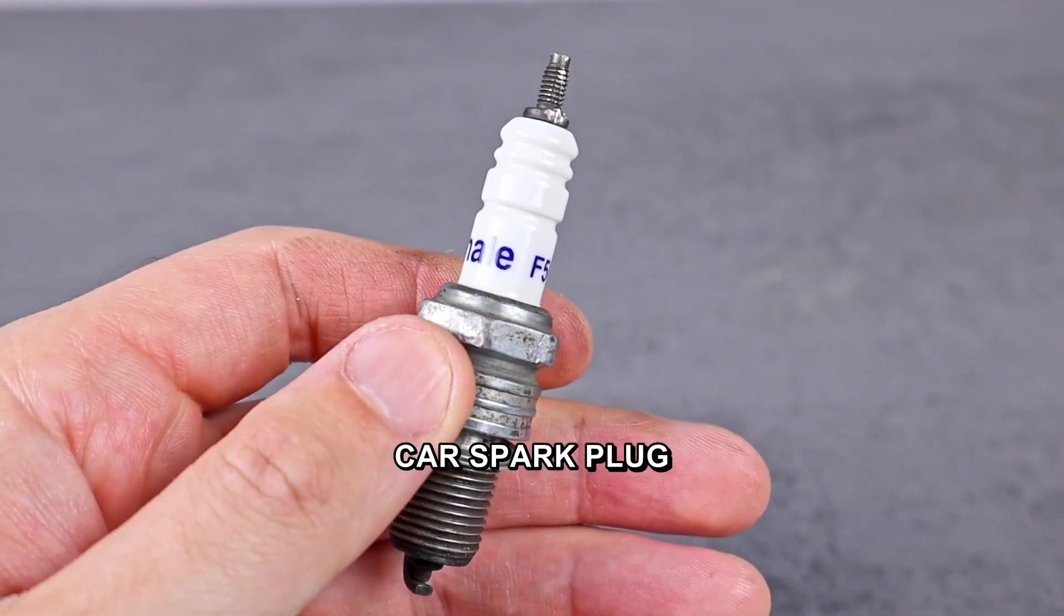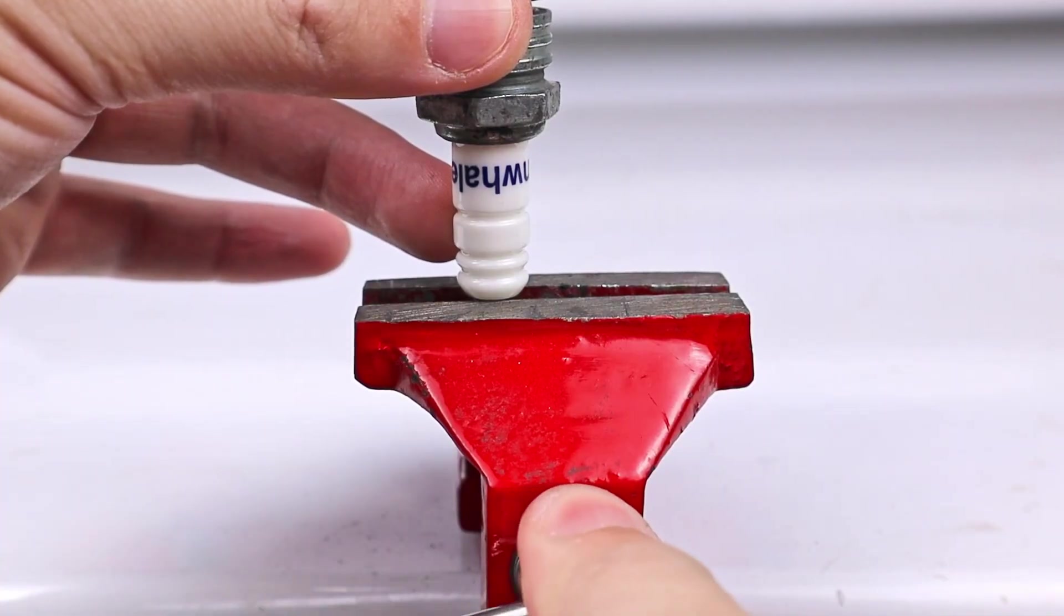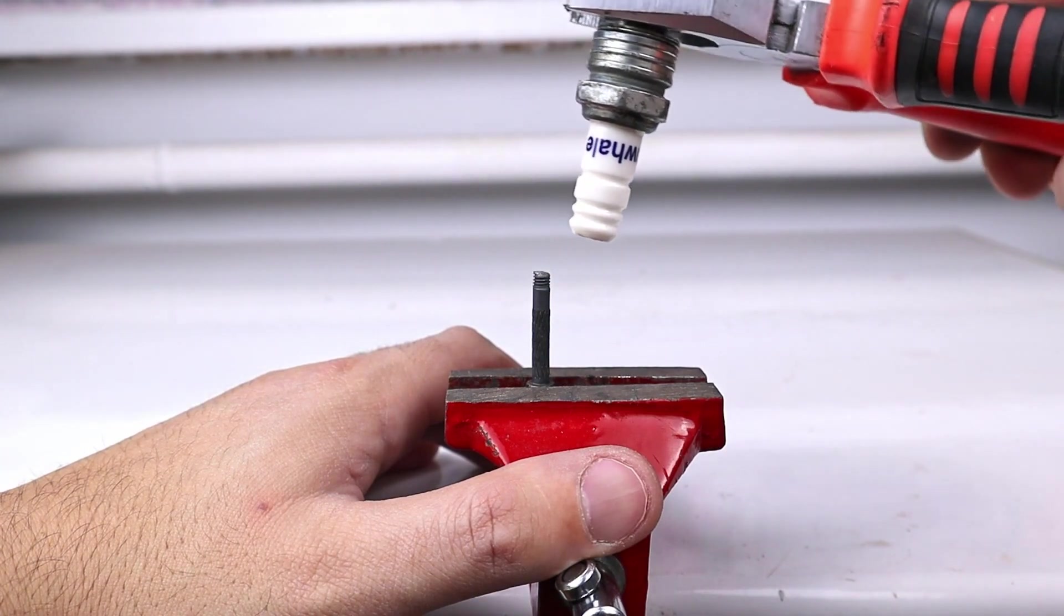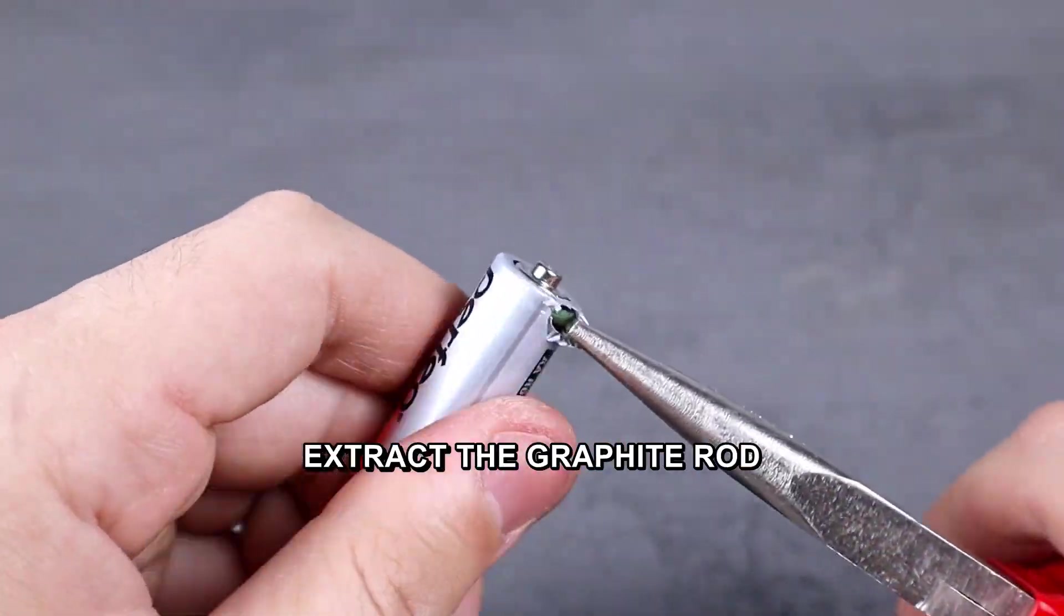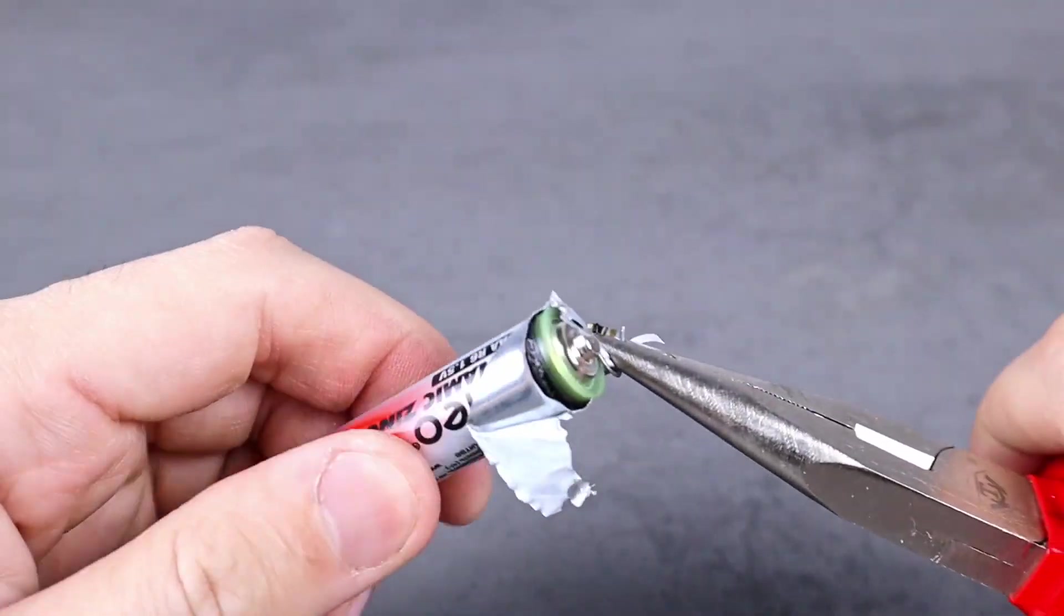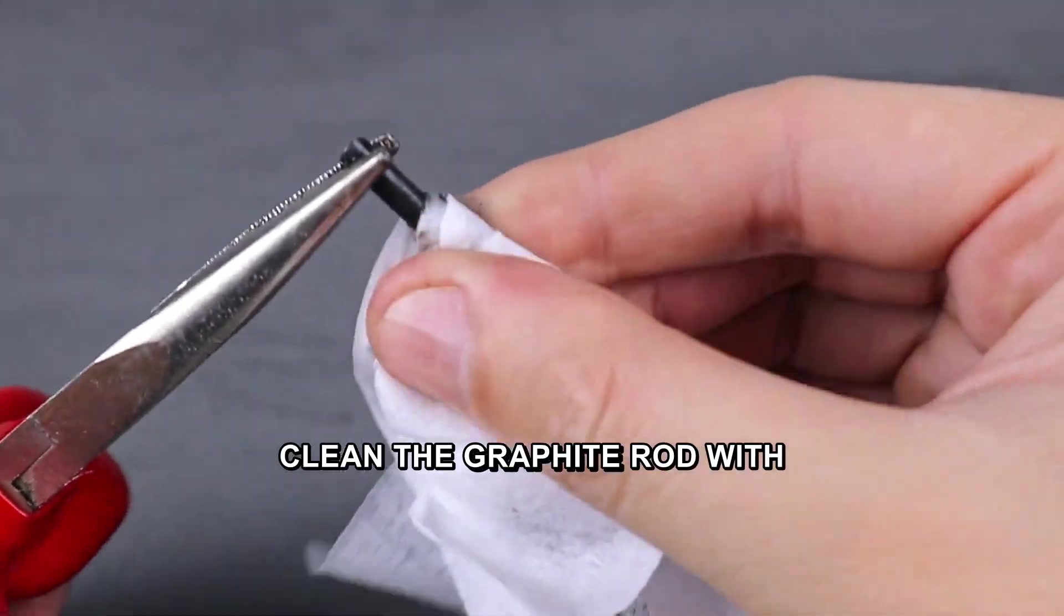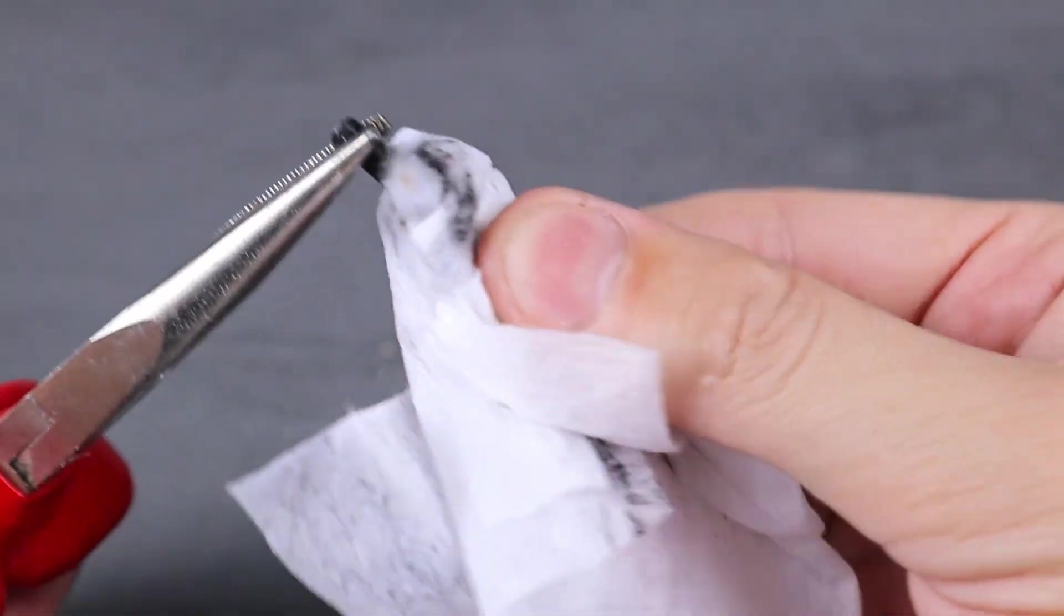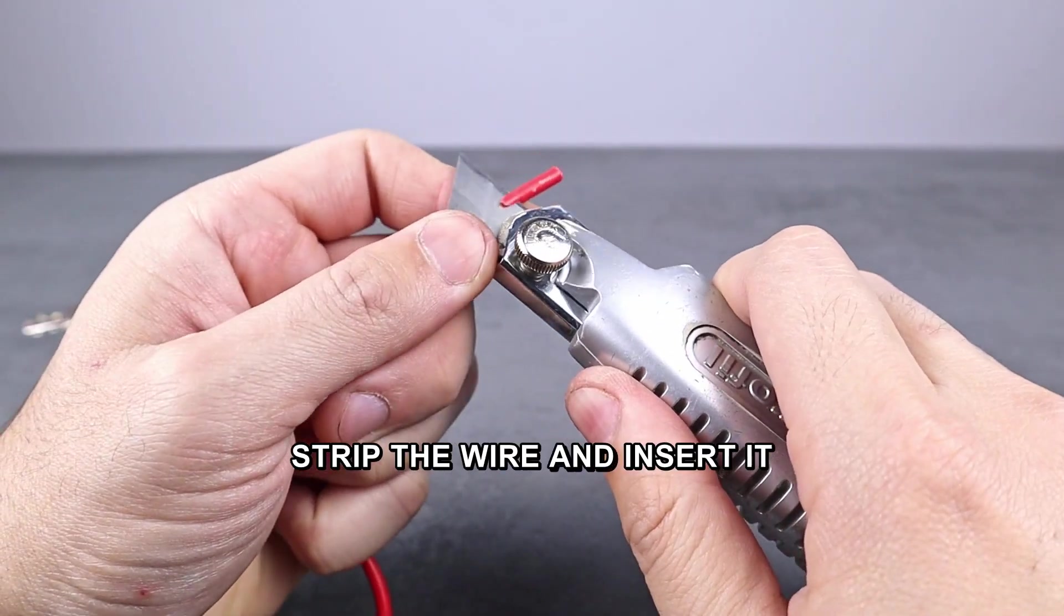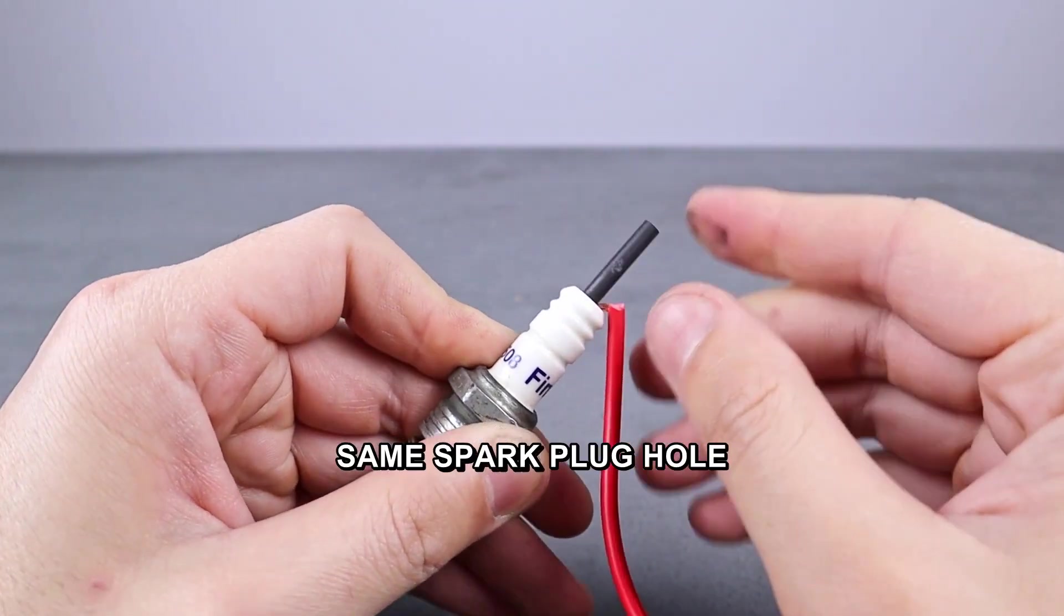Remove the terminal from the car spark plug. Disassemble an AA battery and extract the graphite rod. Clean the graphite rod with a wet wipe. Strip the wire and insert it into the spark plug hole. Place the graphite rod into the same spark plug hole.